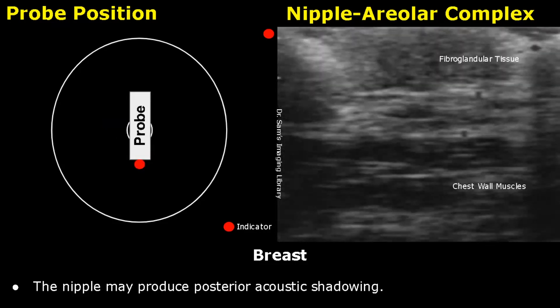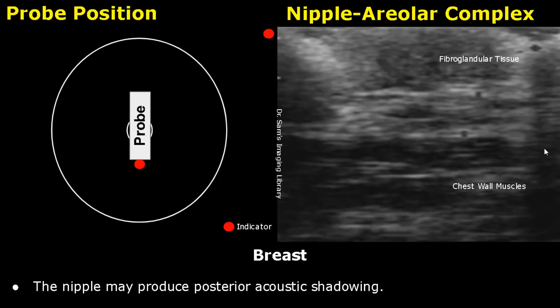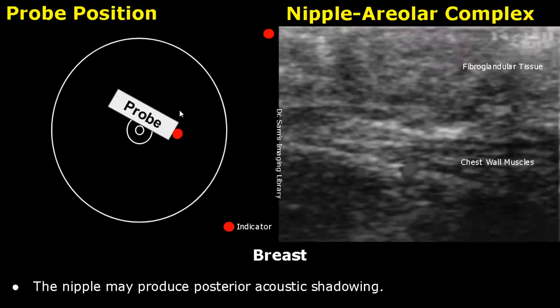In this probe position, the indicator is directed downwards towards the patient's feet and we get this image of the nipple areolar complex. Here is another probe position for scanning the nipple areolar complex, showing the fibroglandular tissues and the striated chest wall muscles. Thank you so much for watching — please subscribe and stay tuned for more imaging videos.